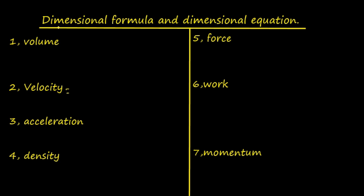Dimensional formula of a given physical quantity is an expression showing the dimensions of the fundamental quantities. For example, volume is length into breadth into height. The basic quantity is length and the dimension is L, so L × L × L = L raised to 3. Volume depends only on length, independent of the other six dimensions. By convention, we must also represent the dimensions of mass and time, so M is raised to 0 and T is raised to 0.